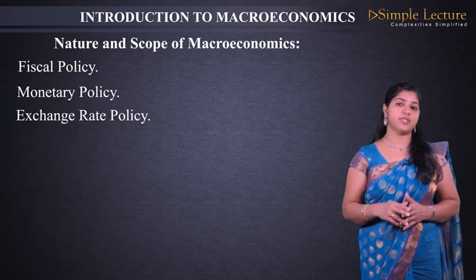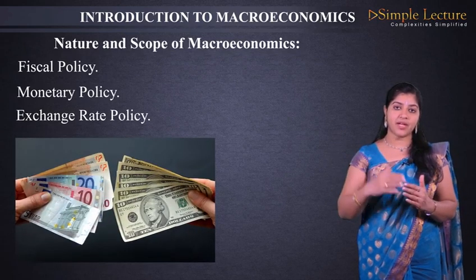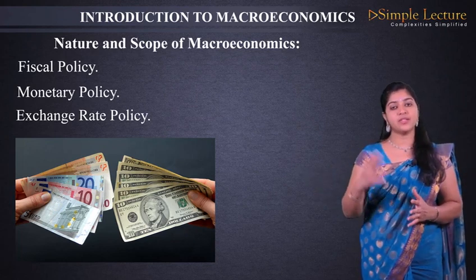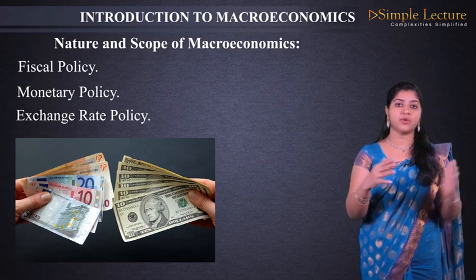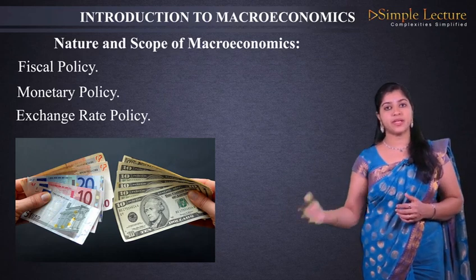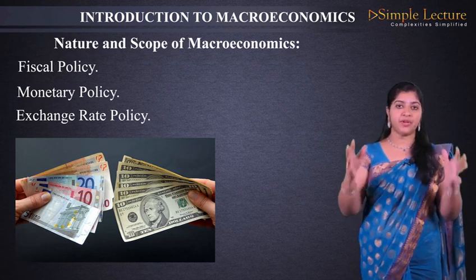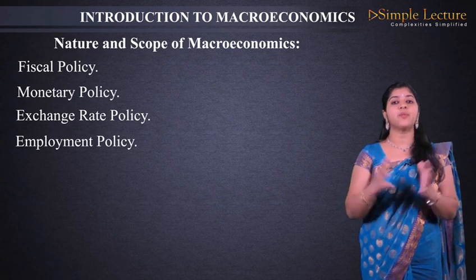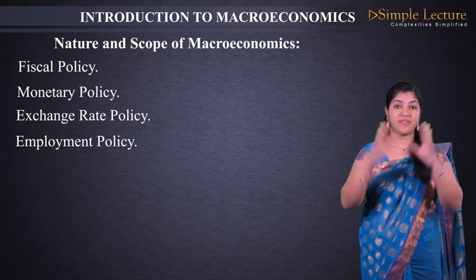Next is the exchange rate policy — the rate of change that takes place when we convert one currency into another currency. For example, 62 rupees for one dollar is the exchange rate. There are different policies: fixed exchange rate policy, fluctuating exchange rate policy, and managed fixed — decided by the government according to the situation. This is also studied in macroeconomics. Next is employment policy — different kinds of employment policies made by the government — this also affects the whole economy and is studied in macroeconomics.